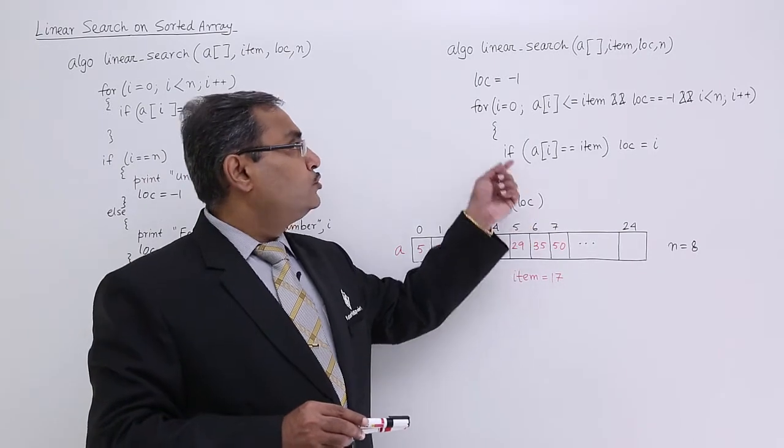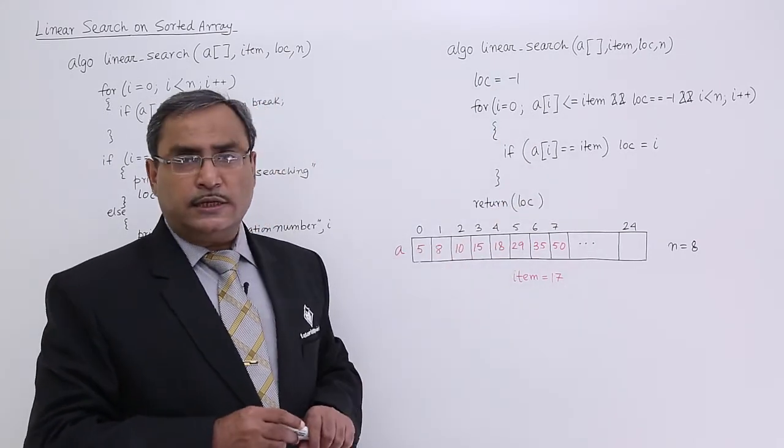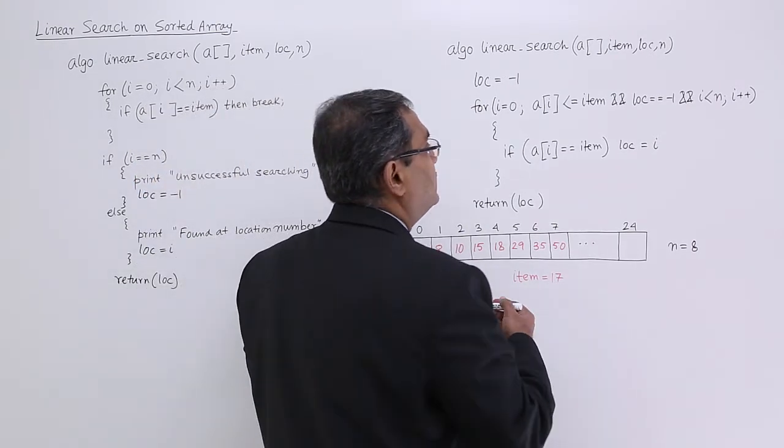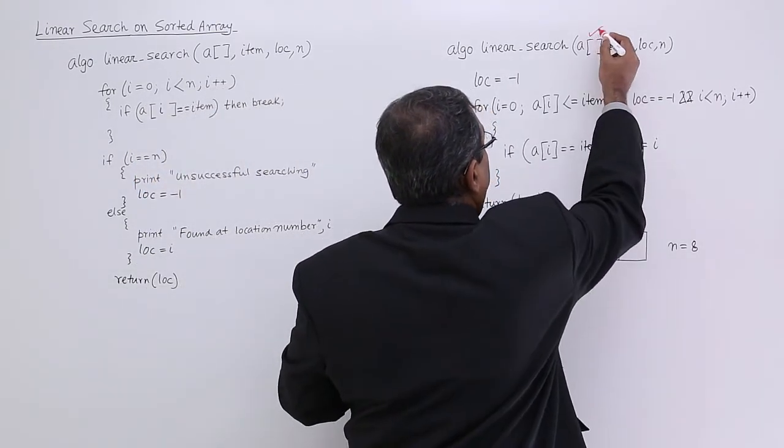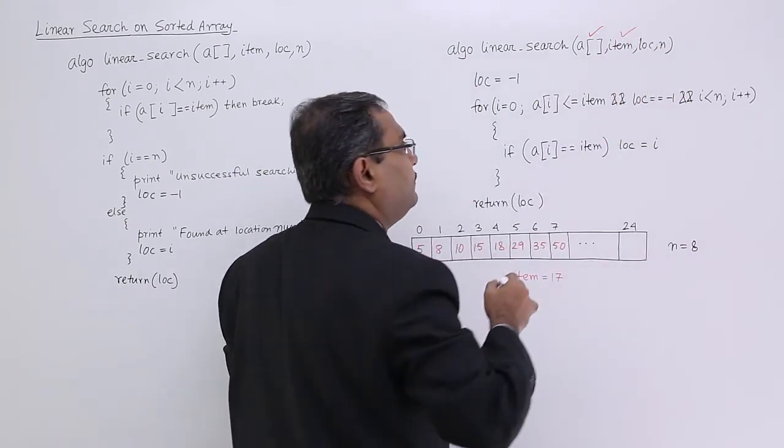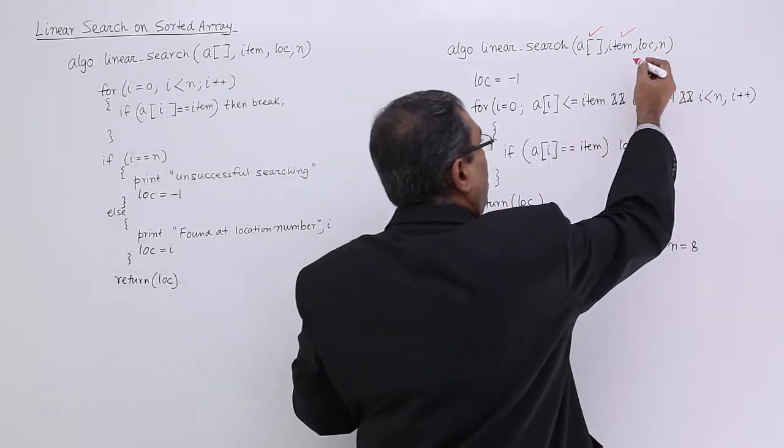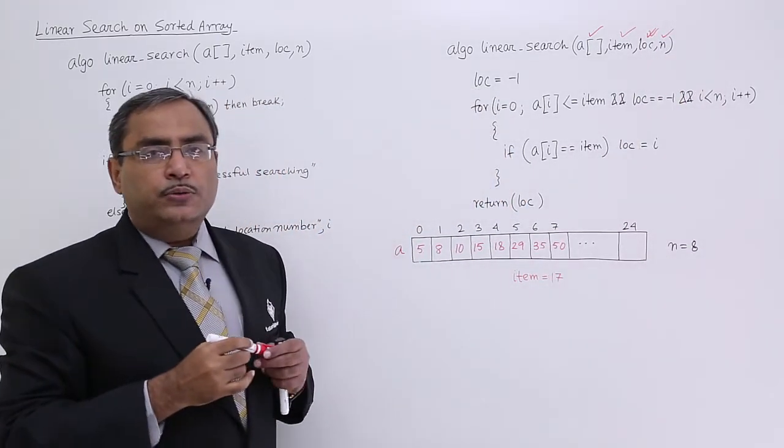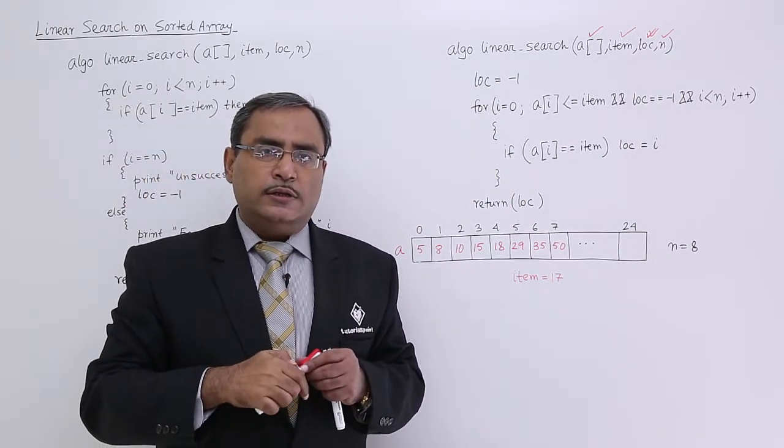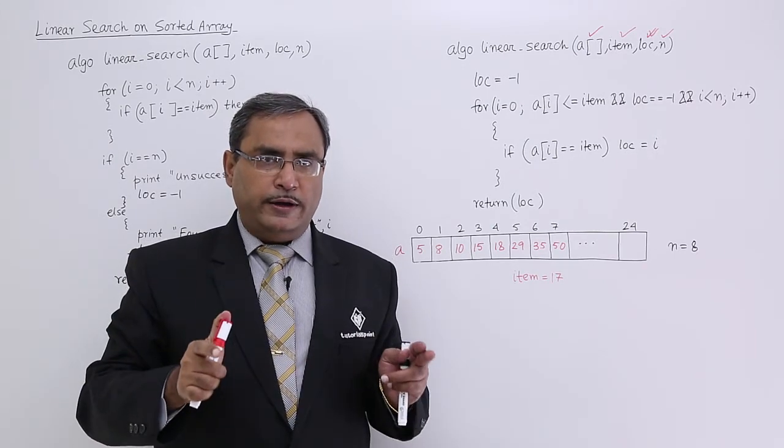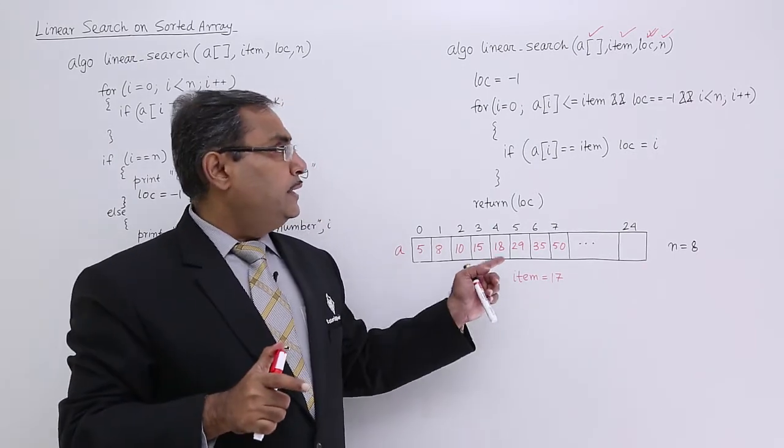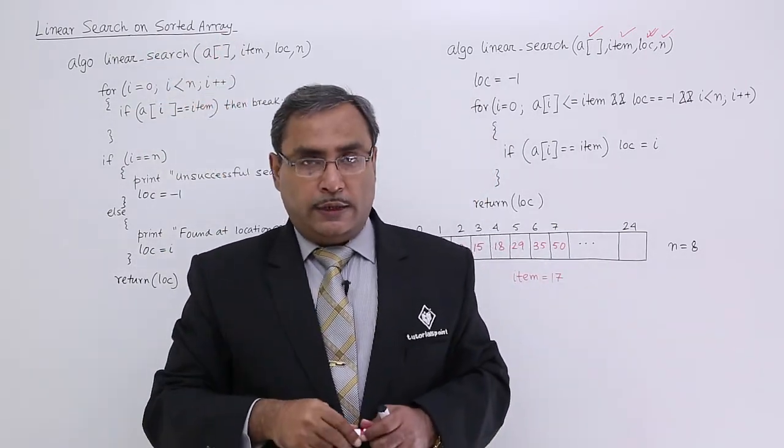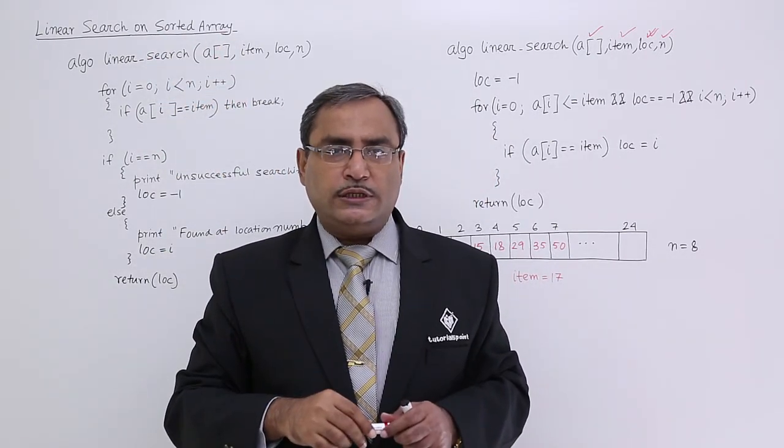In this way, this particular linear search algorithm has been updated. Here, a is the name of the array, item is the value to be searched, lock is the output argument, and n is also the input argument which will denote the size of the value data, number of value data residing in the array. In this way, this particular linear search can be updated for sorted array. I think you are getting this logic. Thanks for watching this video.